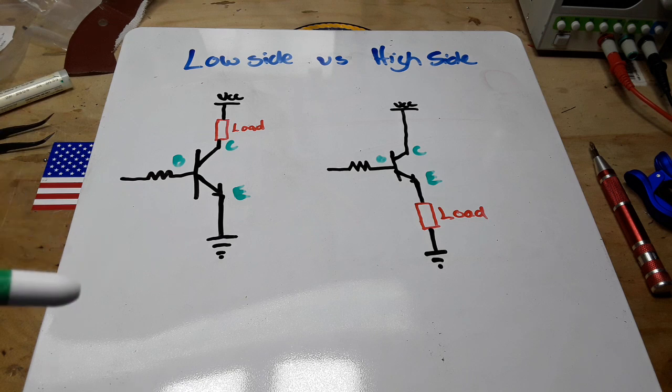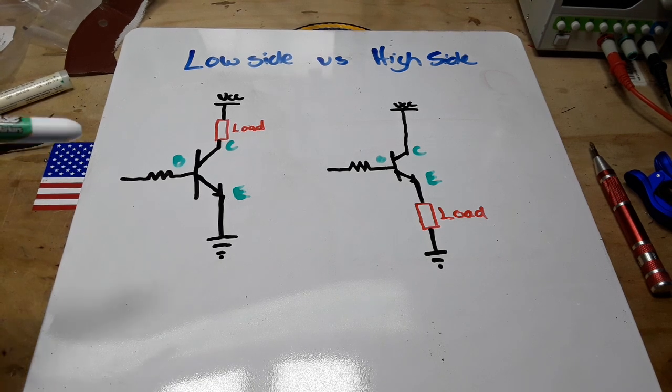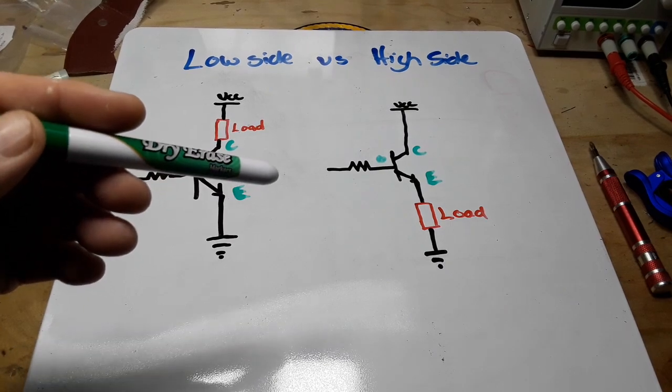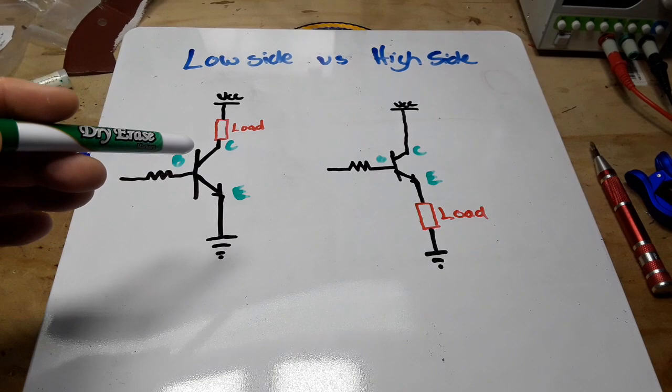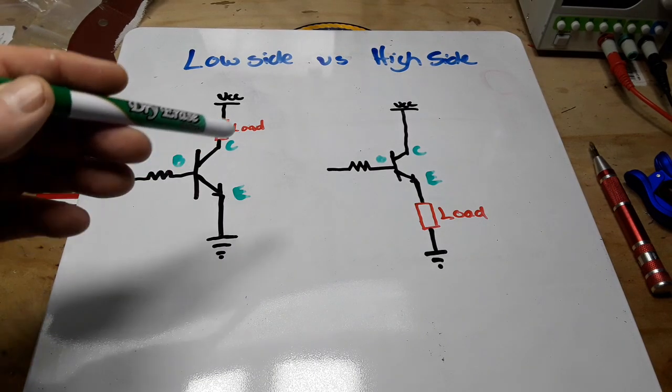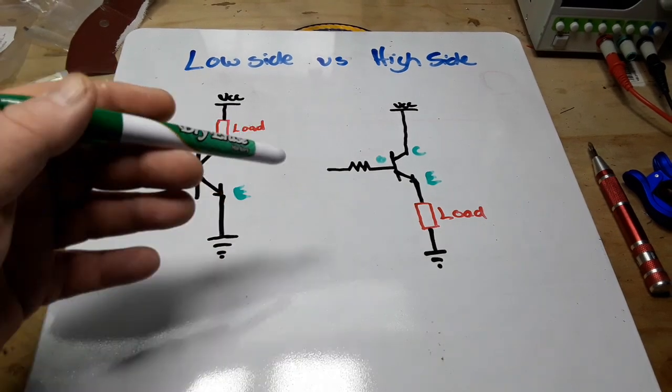Think about this for a second, what are these two different things doing? Well the low side switch is switching ground while the high side switch is connecting our power supply or our voltage.